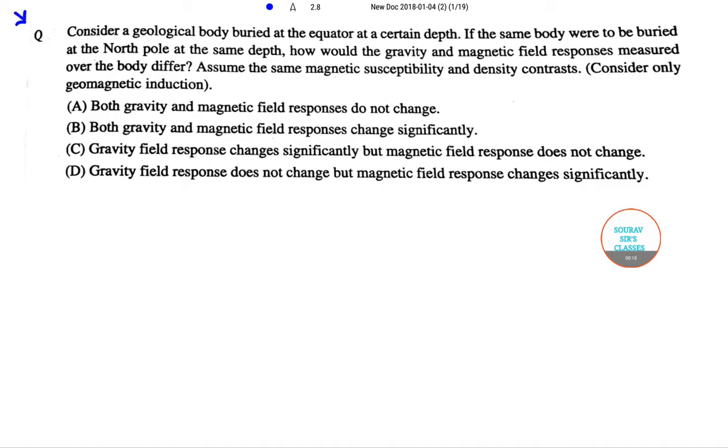The question says consider a geological body that is buried at the equator at a certain depth. Now if the same body were to be buried at the North Pole at the same depth, the question asks how would the gravity and magnetic field responses measured over the body differ. Now they have asked us to make the assumption that the same magnetic susceptibility and density contrasts.